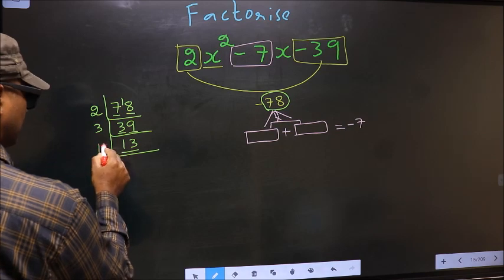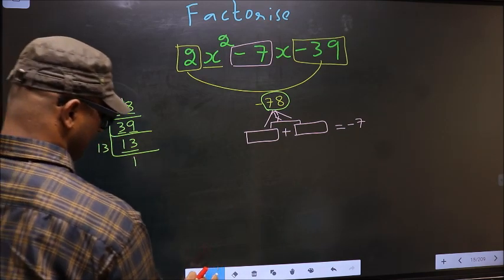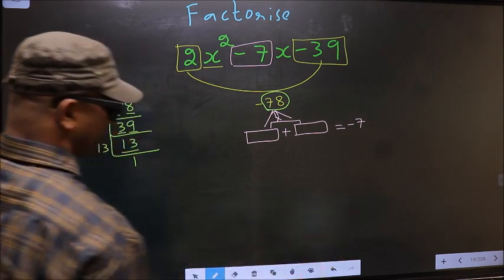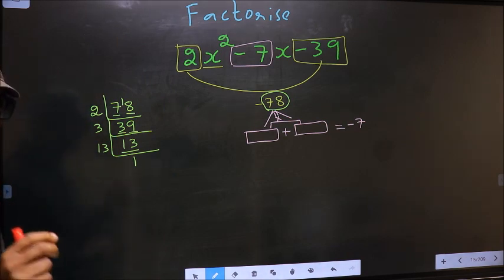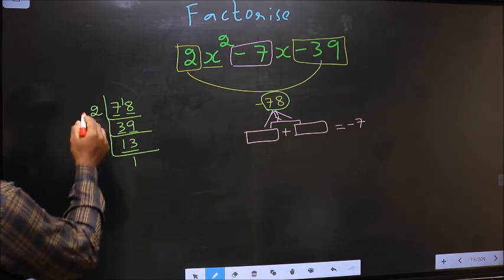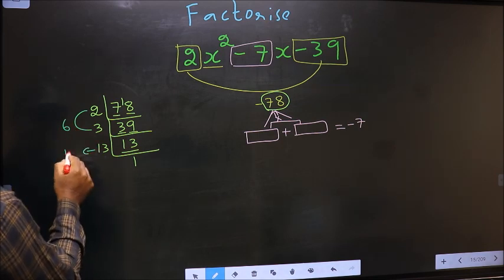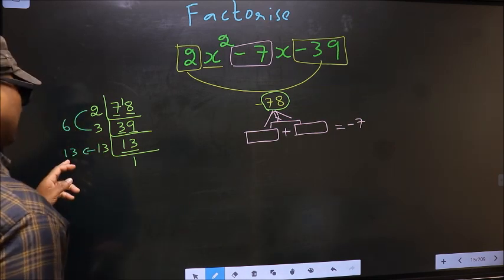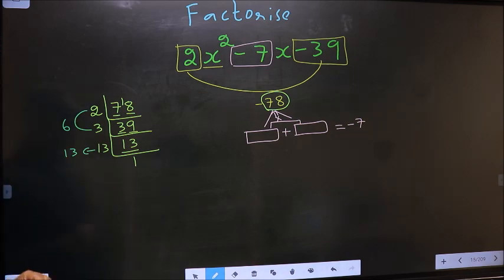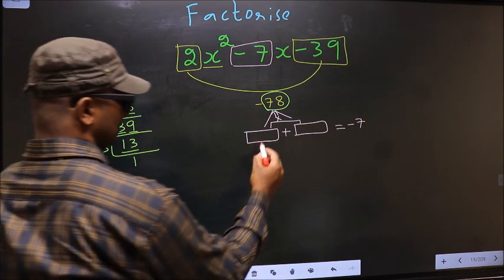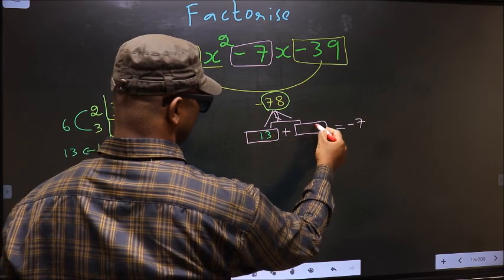Now here we have 13. 13 is a prime number. So 13×1=13. Now the two numbers should be 2×3=6 and the second number is 13. 13-6=7, 13×6=78. So here you write 13 and 6 here.